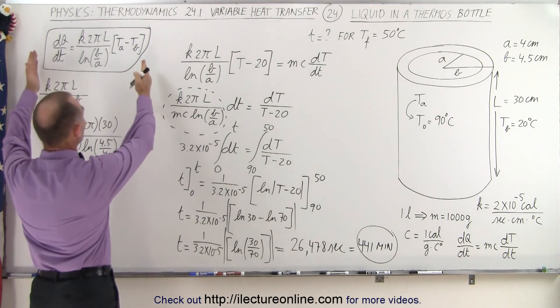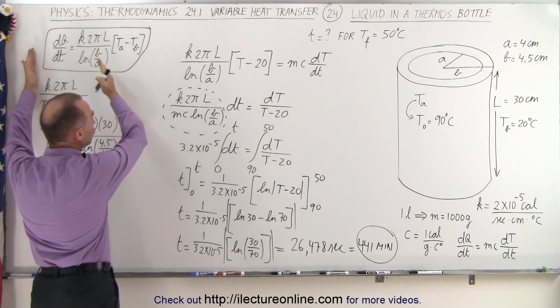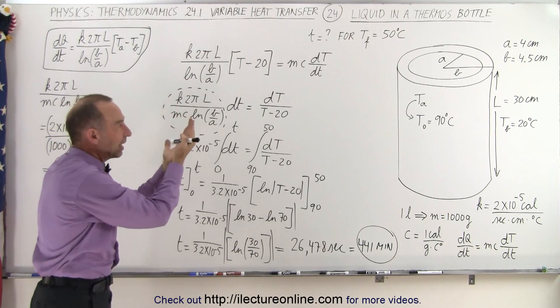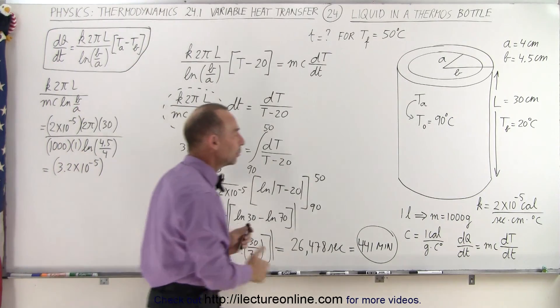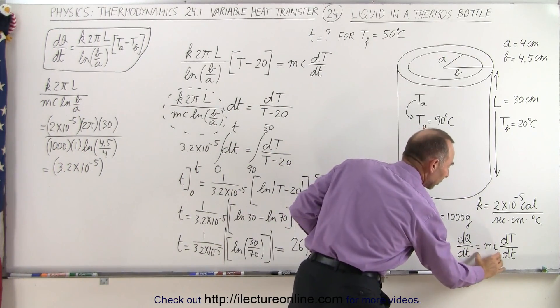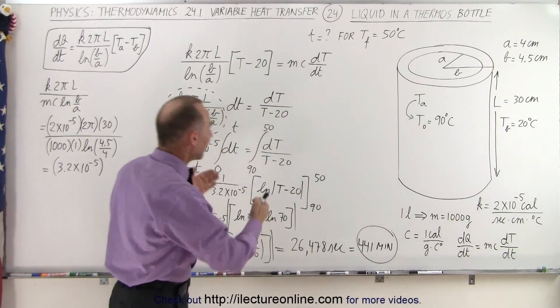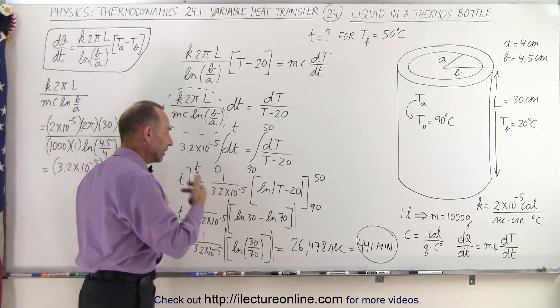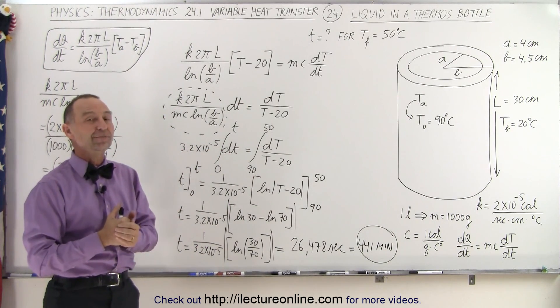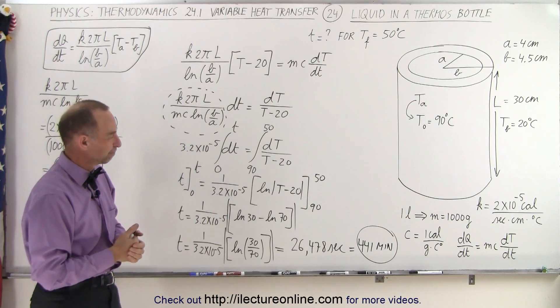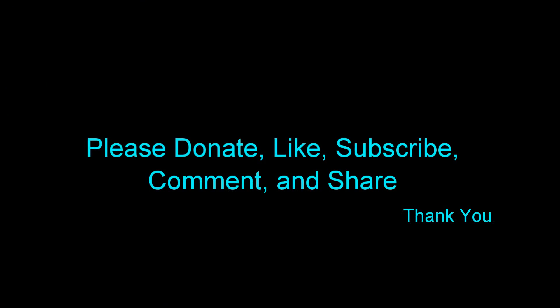So again, we take this equation, which is the general equation for the heat transfer through insulating material around a cylindrical object and set it equal to the heat loss of the liquid that's inside, dq/dt. And then we find the differential equation, integrate, and there's the answer. And that's how it's done. Thank you.